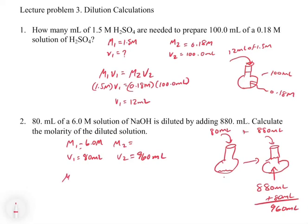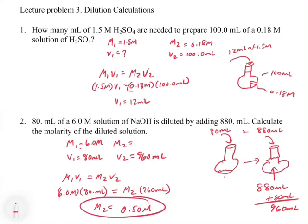Now it wants to know what is the molarity of that solution. We set up M1V1 equals M2V2. You could convert these to liters if you want. We get 6.0 molar times 80 mls equals M2 times 960 mls. If you solve for M2, you get 0.50 molar.